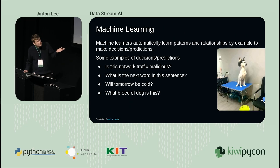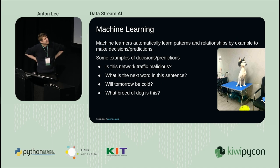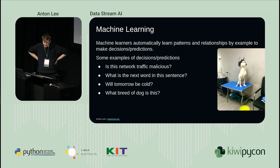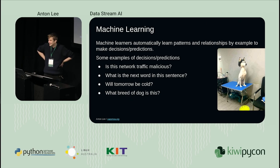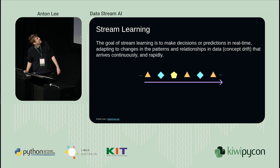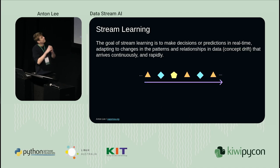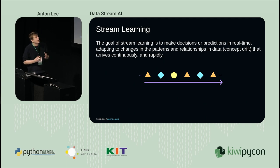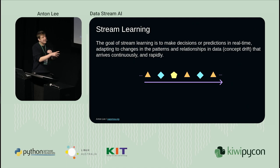And what breed of dog is this? The AI might struggle with that. When I was putting this slide together, I searched for dog on my phone and forgot I had this picture. So, stream learning is a niche within machine learning. And the goal of stream learning is to learn patterns and to make decisions from a stream of data that's just being fired at you.